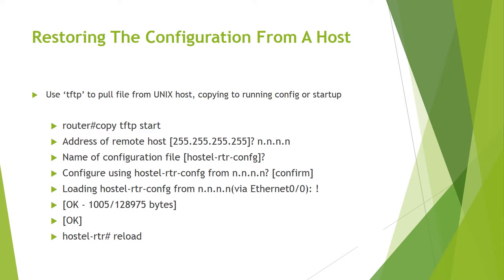Restoring the configuration from a host. Use TFTP to pull the file from a Unix host. Copy to running config or startup config. Router# copy tftp. Enter the start address of the remote host, subnet mask, and IP address. Enter the name of the configuration file: hostel-rtr-config. Configure using hostel-rtr-config from the network address.